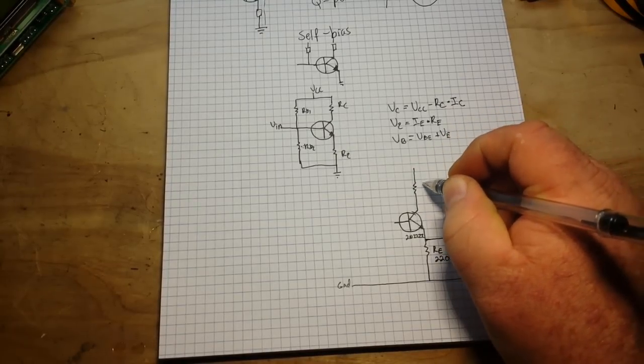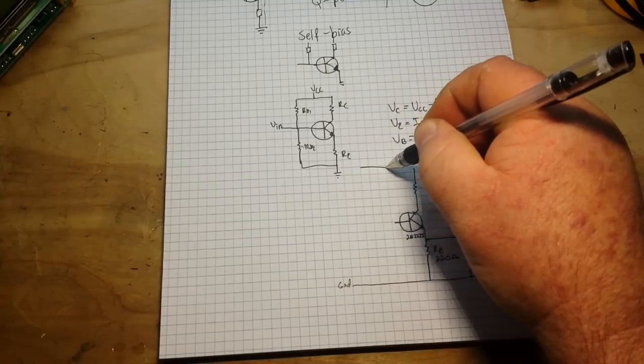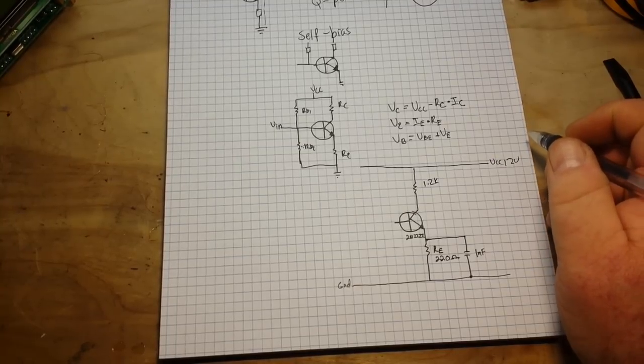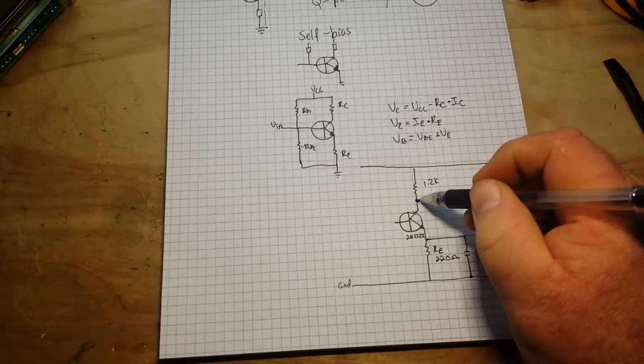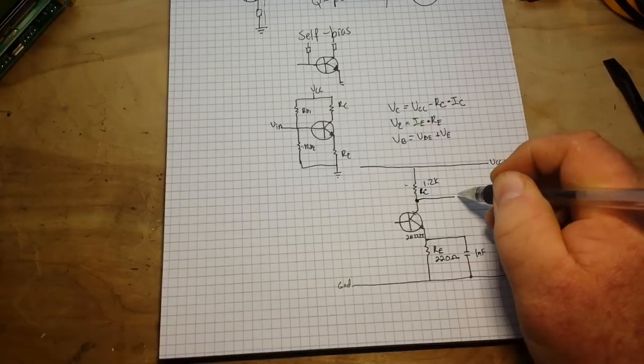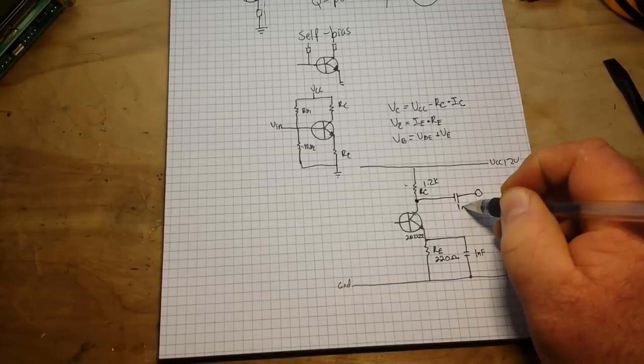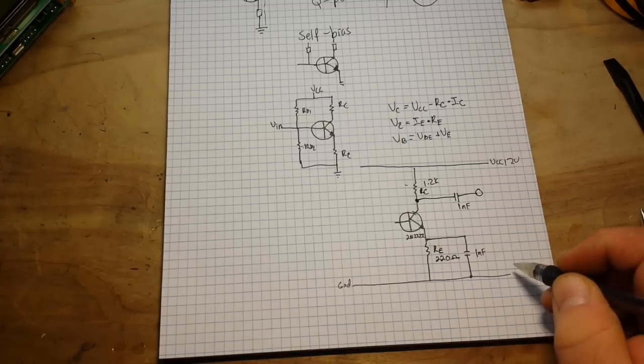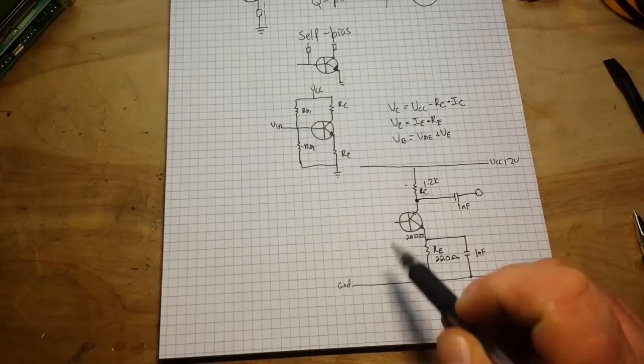Up is our collector biasing resistor. And in this case, we're going to use 1.2K. And that's going to go up to our VCC, which in this case we'll call 12 volts. And we will take our output in between the collector and RC. So this will be our output here. And we're also going to decouple that again. One nano will do it. So now we have the output of our circuit. Now let's talk about the input of our circuit, which will be on the base.